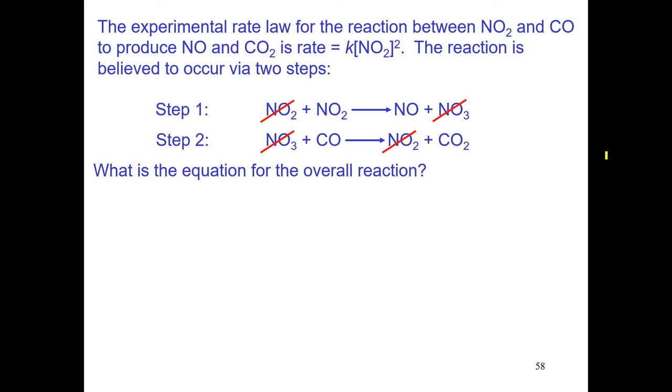So, now we add them up and the equation we get is NO2 plus CO yielding NO plus CO2. You can see where that is balanced in nitrogens, carbons, and in oxygens. That is the equation. Okay. So, as far as that is concerned, the reaction mechanism works because it yields the overall reaction equation.